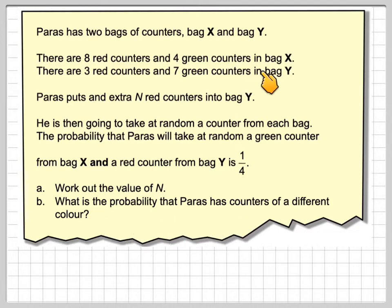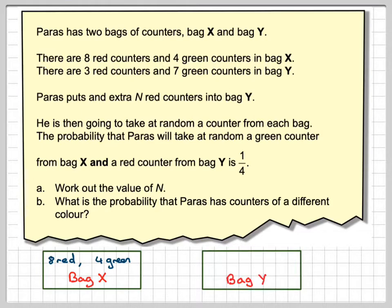First of all we've got to sort this out. If we draw a little rectangle to represent bag X, we have eight red and four green. Then we do a similar thing for bag Y. Now bag Y we have three red, but we are going to add another N red counters to that. So we'll make that be three plus N red. And then we have seven green counters.